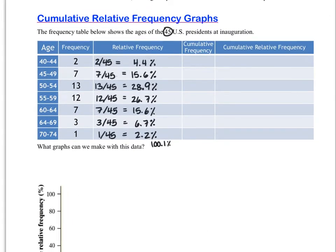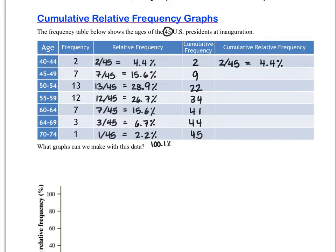We've got all the relative frequencies figured out; we do have a little round-off error, totaling 100.1%, but we used proper rounding rules so we'll keep them as they are. Now let's talk about cumulative frequency — it accumulates the frequencies. We start with the first frequency of 2, then add the next group: 2 plus 7 is 9, then 2 plus 7 plus 13 is 22, then 34, and so on until all 45 presidents are accounted for. Then we find the cumulative relative frequency by dividing each cumulative frequency by 45.